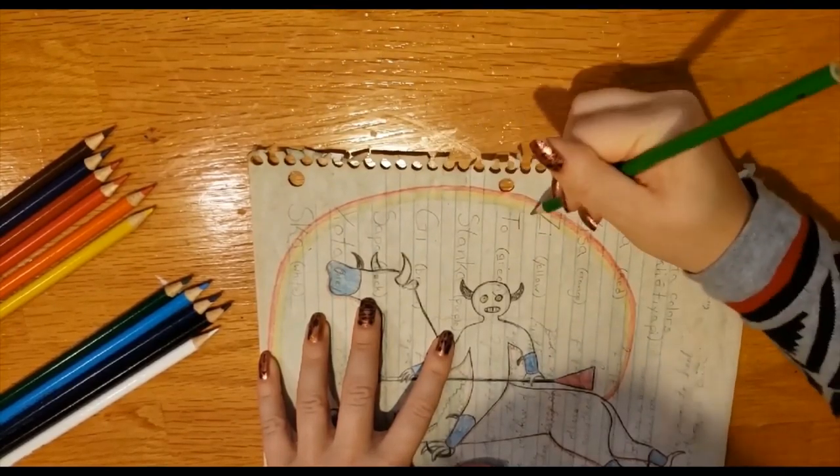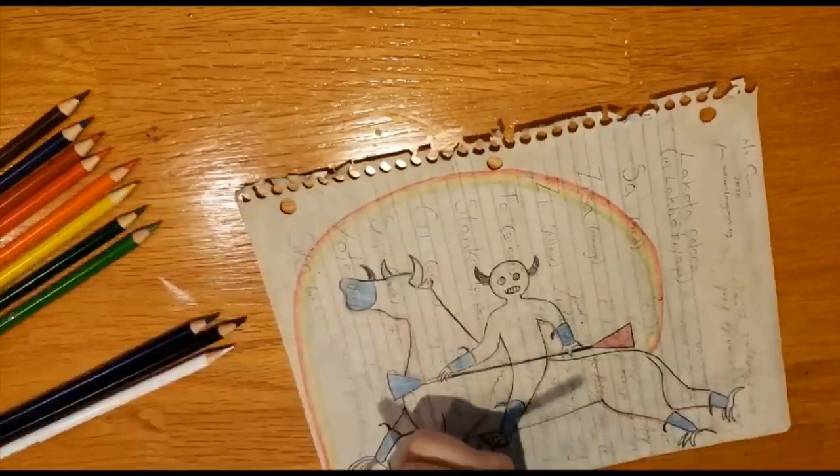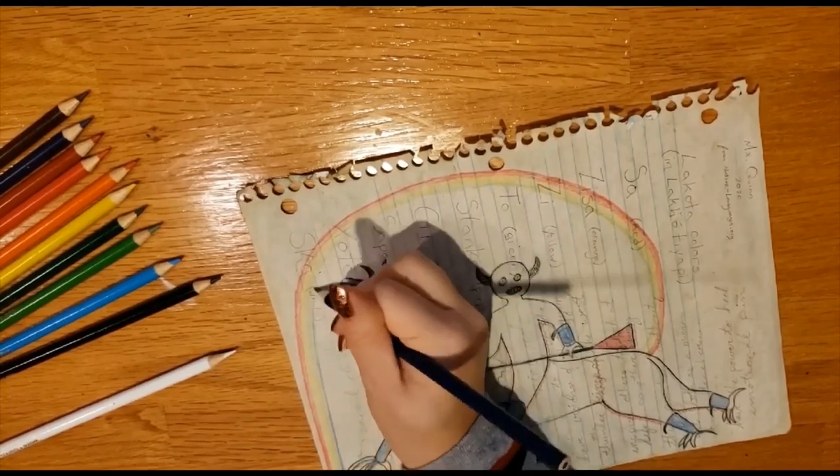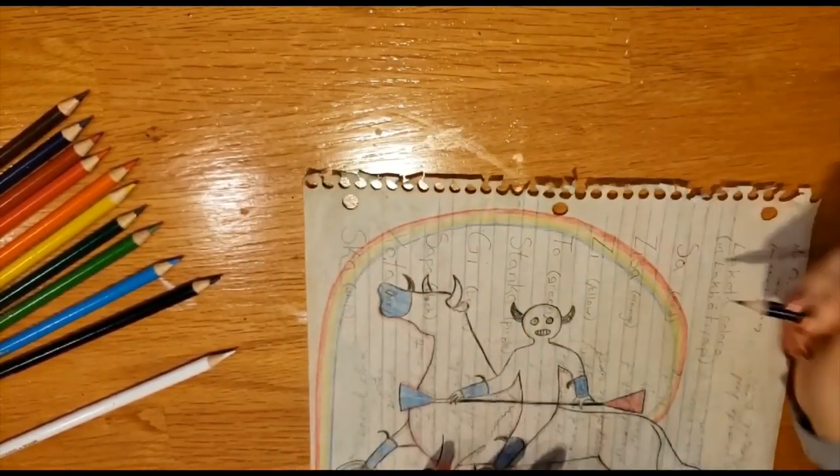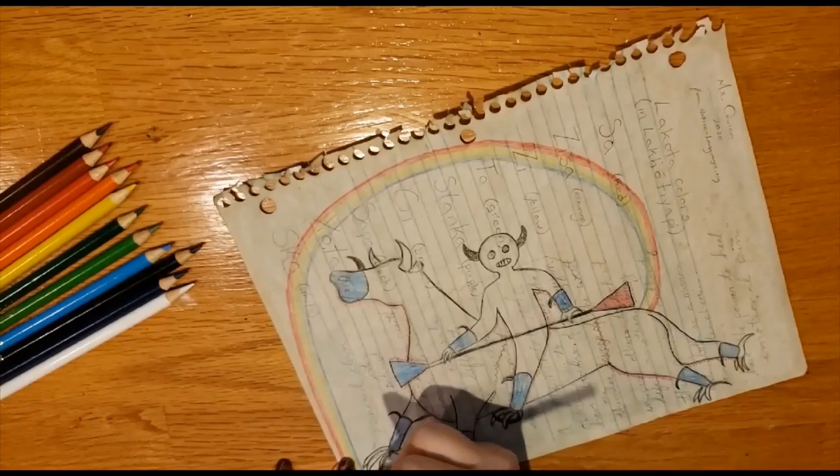To is turquoise or bluish green, and Stanka is purple. Notice how Ziza and Tozi both combine the colors on either side, just as you would mix paint to make those colors.